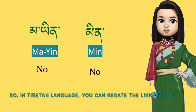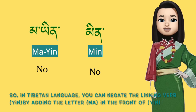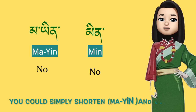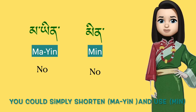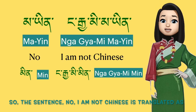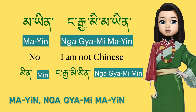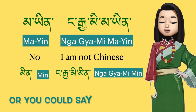If somebody asked me 'Are you Chinese?' I would say 'No, I'm not Chinese.' In Tibetan language, you can negate the linking verb 'yin' by adding the letter 'ma' in front of 'yin', so that is 'ma yin'. Or you could simply shorten 'ma yin' and use 'min'.